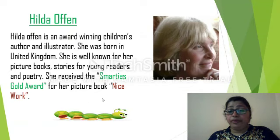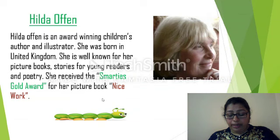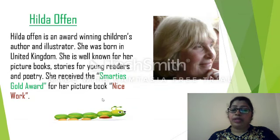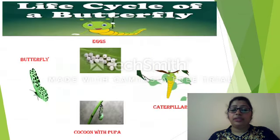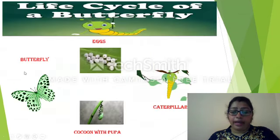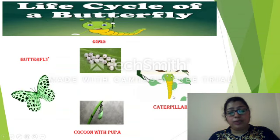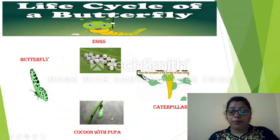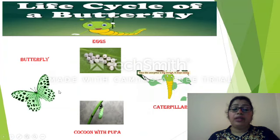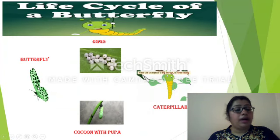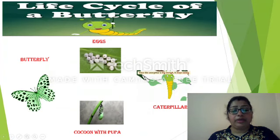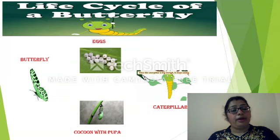Before we begin the poem, children, let us look into the life cycle of a butterfly which begins with an egg and progresses into a caterpillar, then to a pupa and finally into a colorful and beautiful butterfly which attracts everyone.